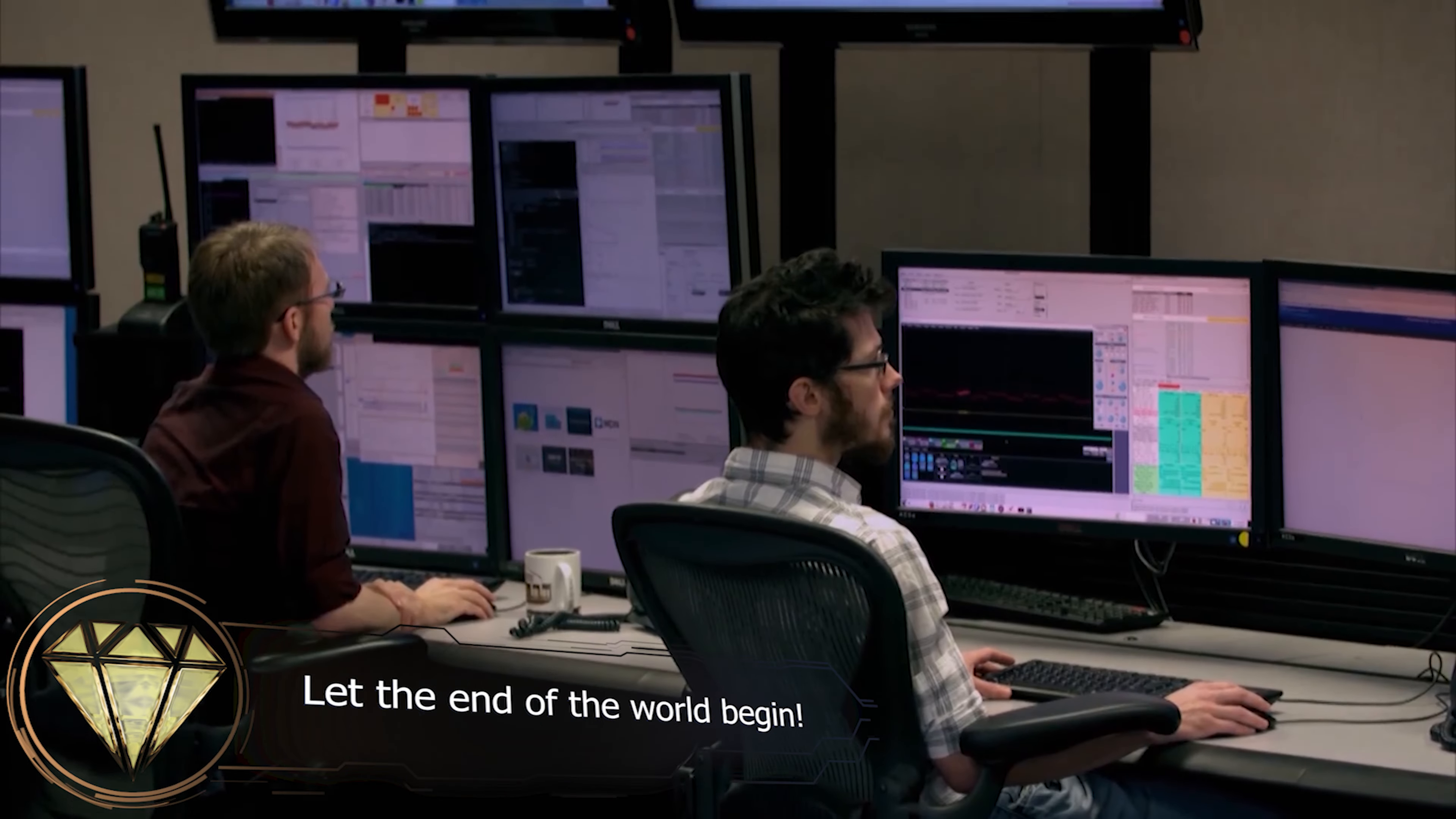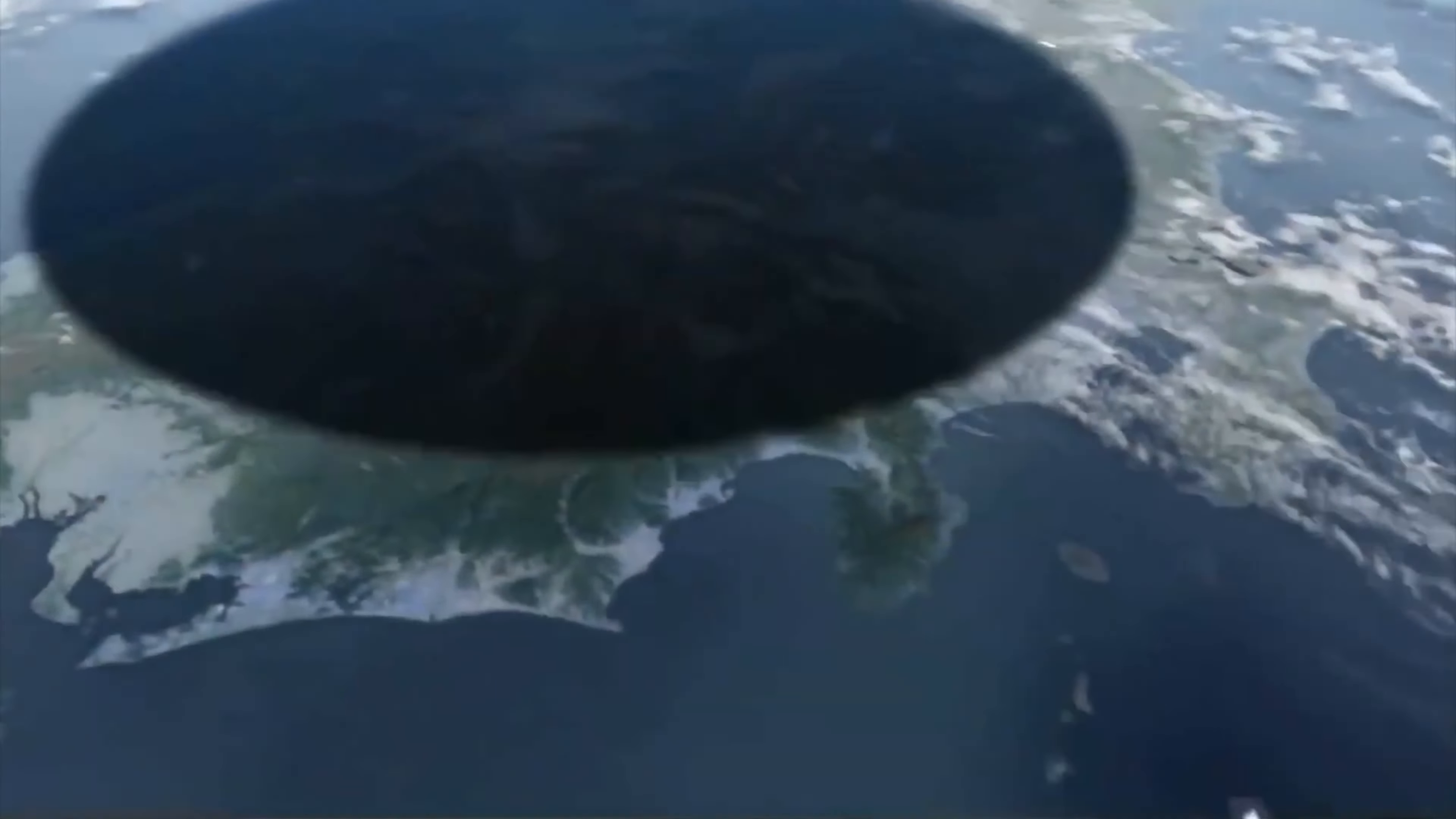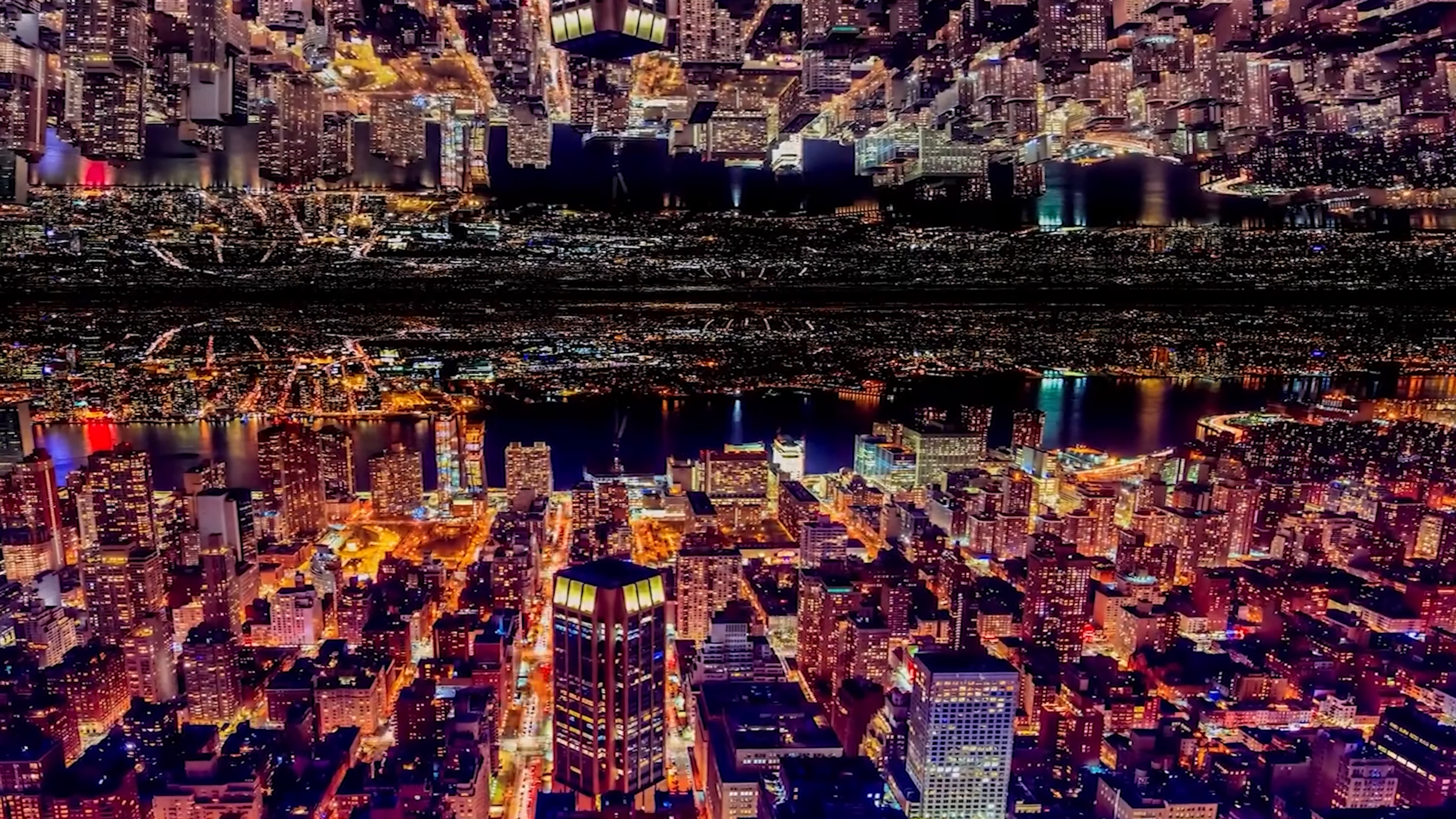Now, suppose a certain mad scientist, by some mysterious means, procures from somewhere a mass of matter that is more than 9 times the mass of the Moon, and then shrinks it into a black hole with a radius of 1 millimeter. Now, what would happen to us?